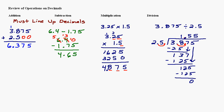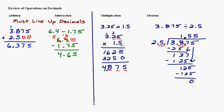Multiplying and dividing share a lot of similar rules, as do adding and subtracting. Adding and subtracting require you to line up the decimals. Multiplying and dividing do not — you perform the operation as if the decimals aren't there and then apply a rule to place the decimal. For multiplication, count the total decimal places in both numbers and match that in your answer. For division, move the decimal so the divisor becomes a whole number, then move the decimal in the dividend the same number of places and bring it straight up for long division.